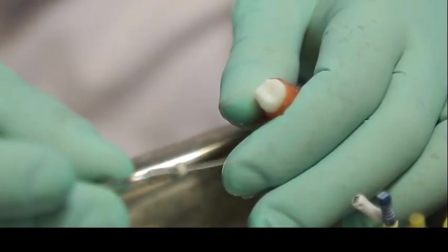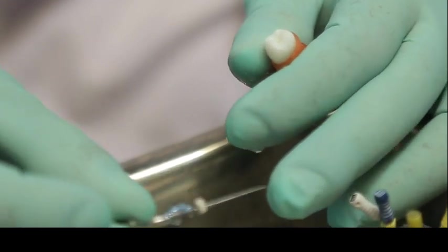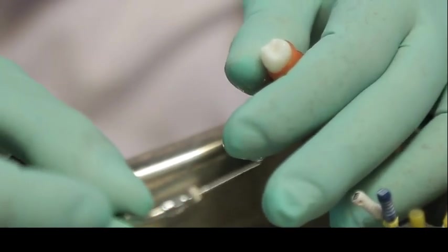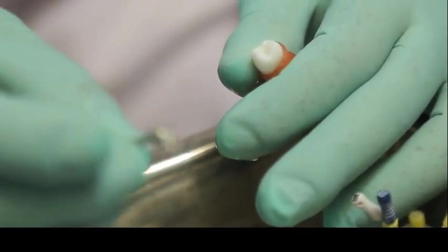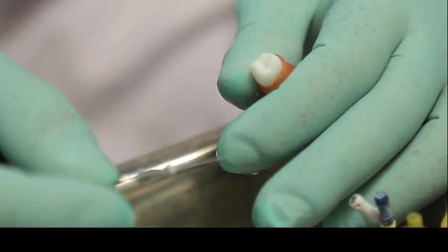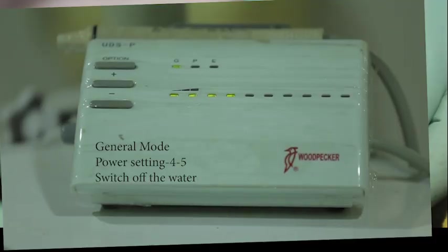This is E1 endo chuck and U-files size 25. These U-files can be attached to this endo chuck and this can be connected to our normal scaler unit to activate the irrigation.